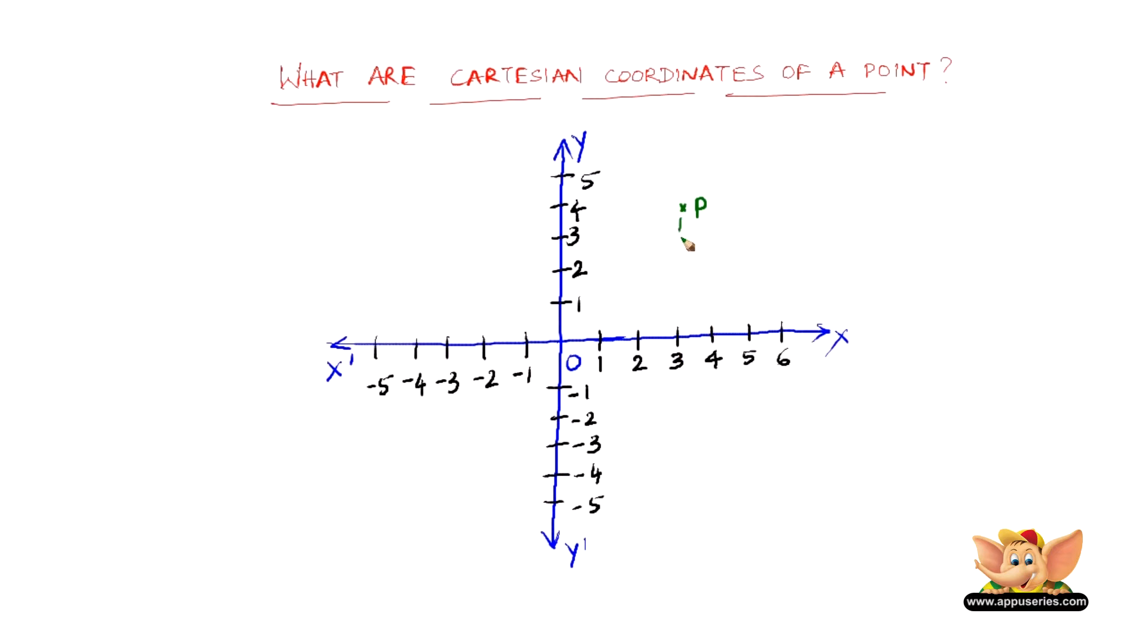So, which is something like this. Now, since we already have a numbered axis here, it is very easy to measure. We can say that the horizontal distance of P from the y-axis is 3 units. And this horizontal distance is called the abscissa.